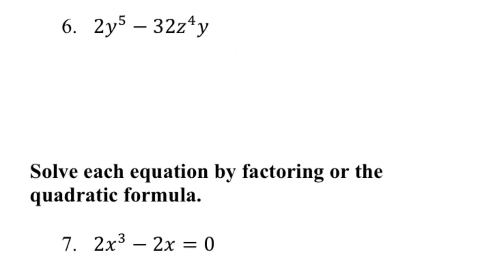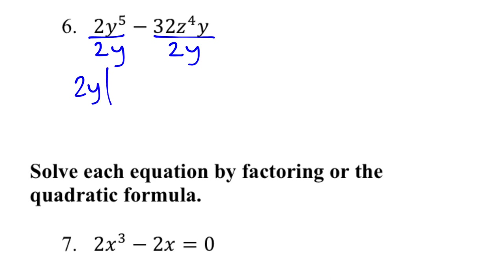Number 6 is similar to number 5, but here you do need to factor out a GCF first. Look for what's in common: 2 and 32 can both be divided by 2, and both terms have y's — one has y to the 5th and the other has just y, so the most you can factor out is y. Factor out 2y, leaving (y to the 4th minus 16z to the 4th) inside. Since y to the 4th and 16z to the 4th are perfect squares with a minus sign, it's another difference of two perfect squares — so you keep going.